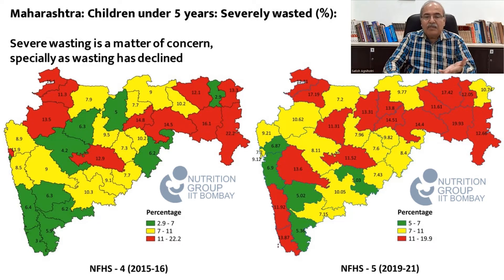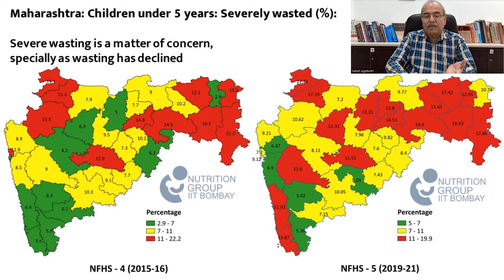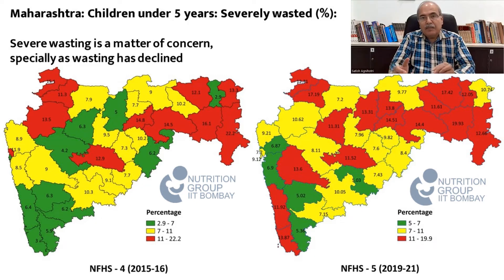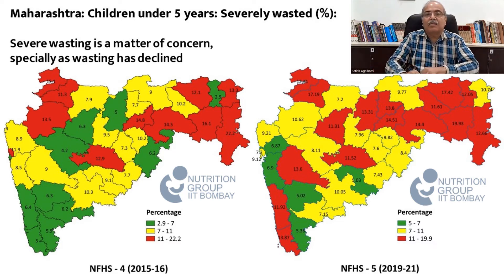The story in severe wasting is more worrying and is a matter of concern. There are losses in the western districts and we see a fairly large wasting patch. If severe wasting hasn't declined — or in fact has gone up — while overall wasting has declined, it would mean that severely wasted children as a fraction of overall wasted children has gone up. We need to look at this with some concern.